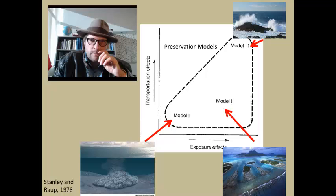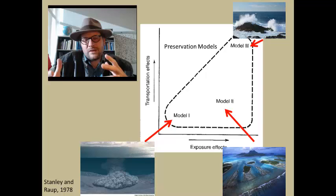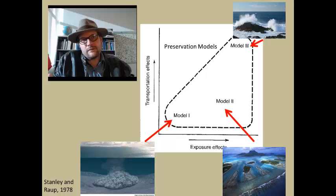Model 2 is an environment similar to Model 1, but with more exposure, such as found in tidal flats. Burial can still be rapid, but there are periods when water levels drop and organisms are exposed to the air. Such environments will have slightly higher levels of exposure and possible transportation of organisms that live in different communities within that area.